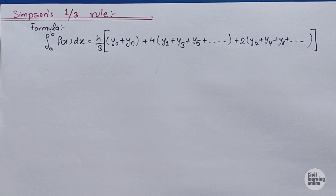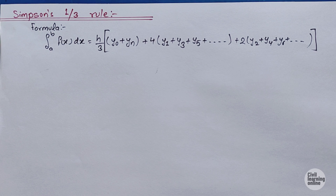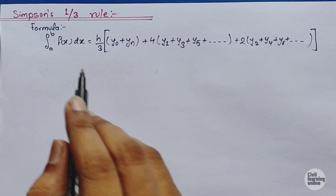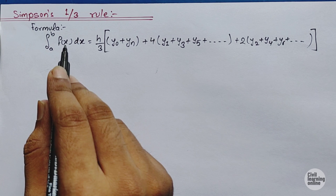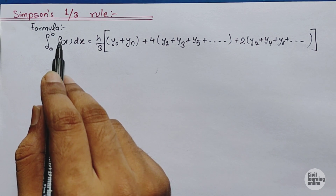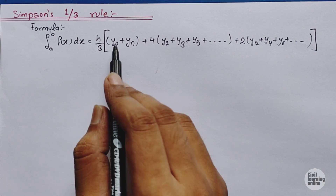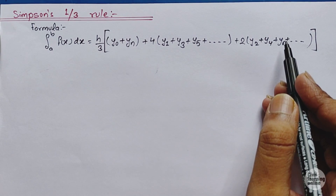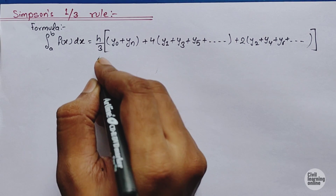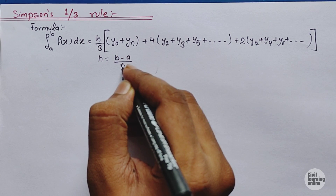Let us begin. First we will discuss the formula and various terms in it, then we will solve an example based on this method. According to Simpson's 1/3 rule, the integration of f(x) dx with lower limit a and upper limit b equals h/3 multiplied by: y-naught plus y-n, plus 4 times the sum of odd-numbered y values, plus 2 times the sum of even-numbered y values. Here h equals (b minus a) divided by n, where n is the number of intervals.